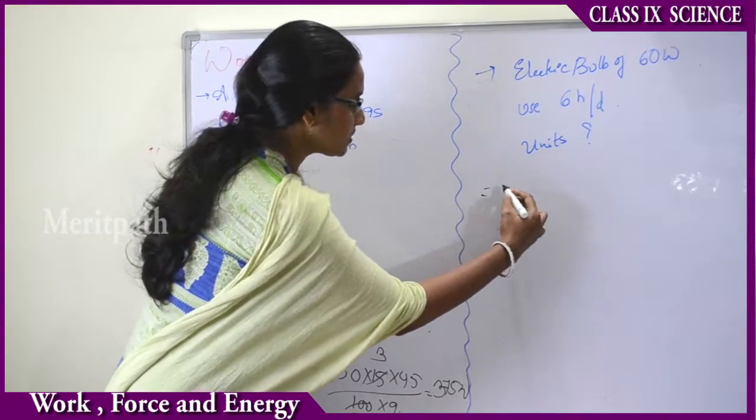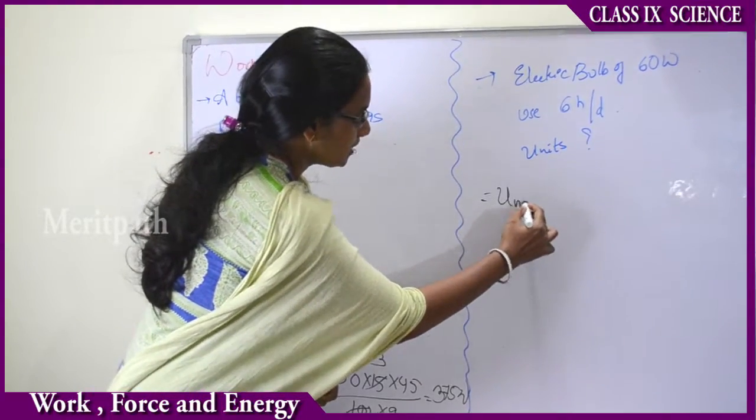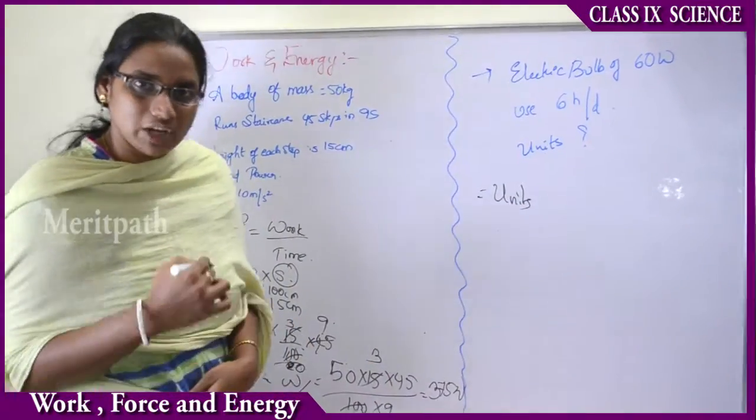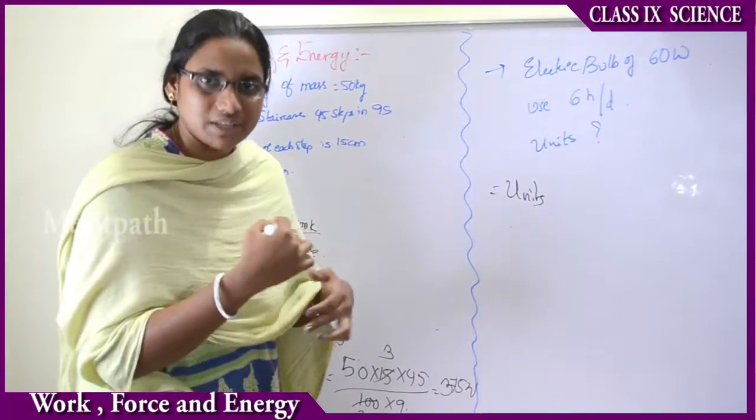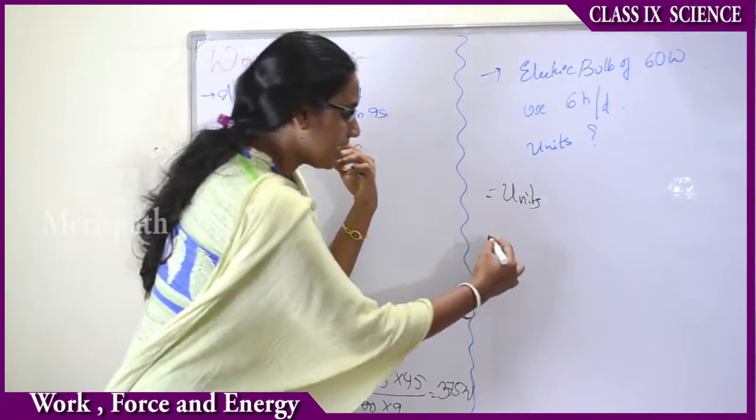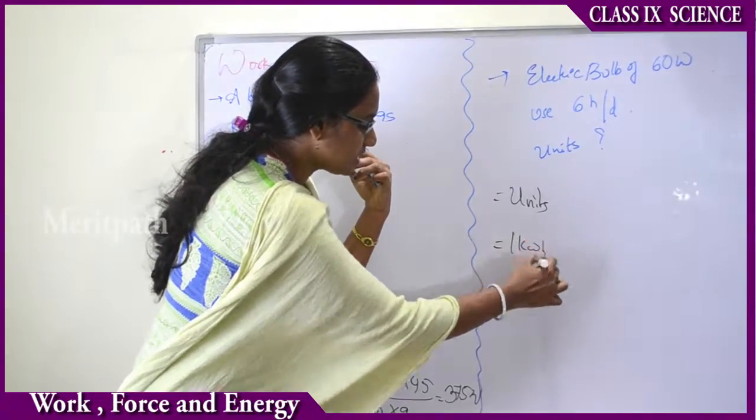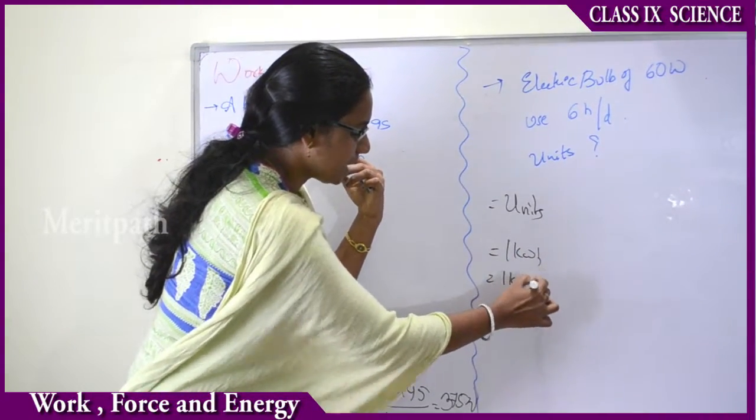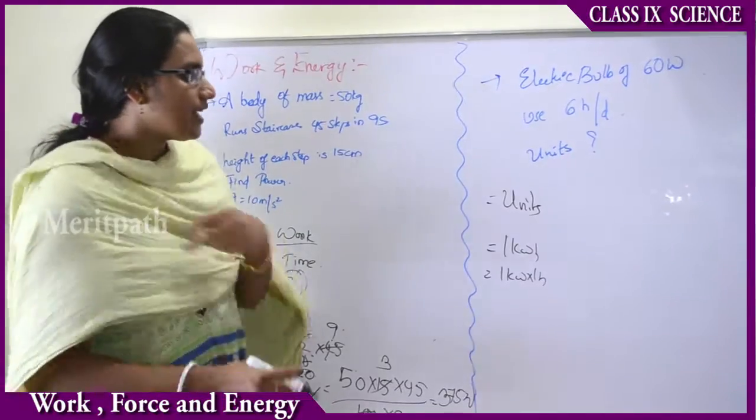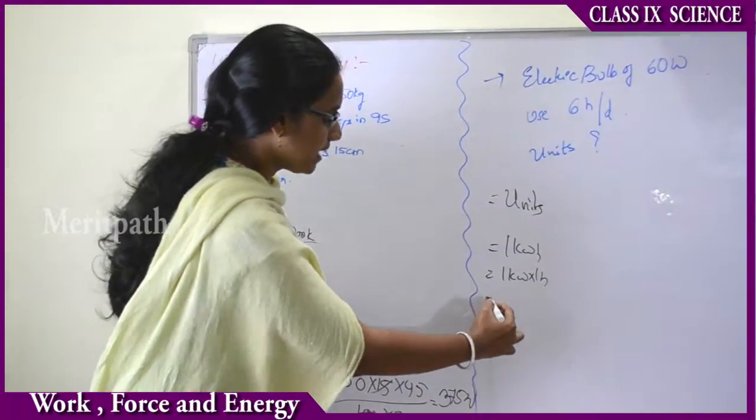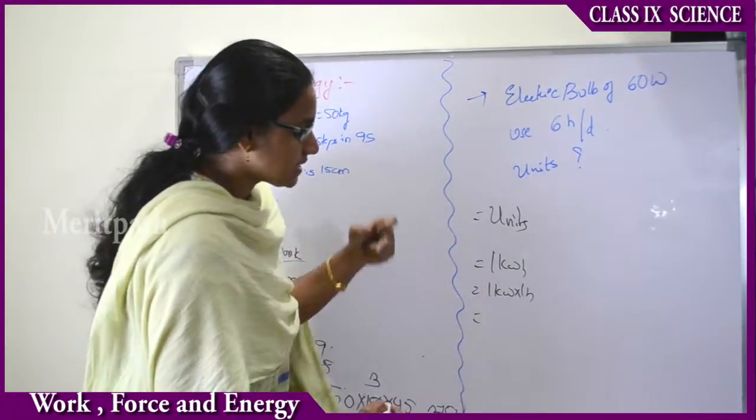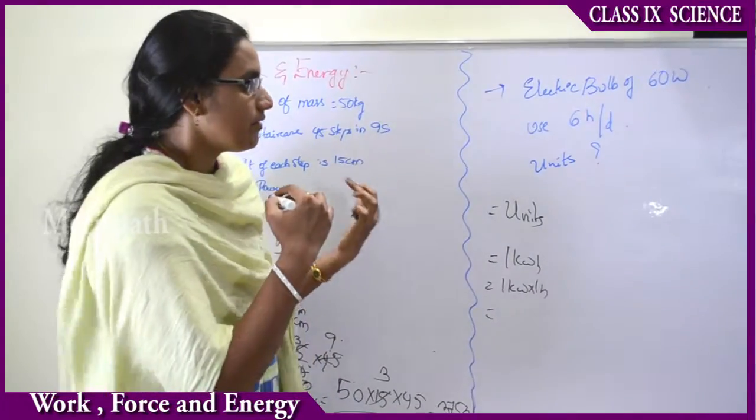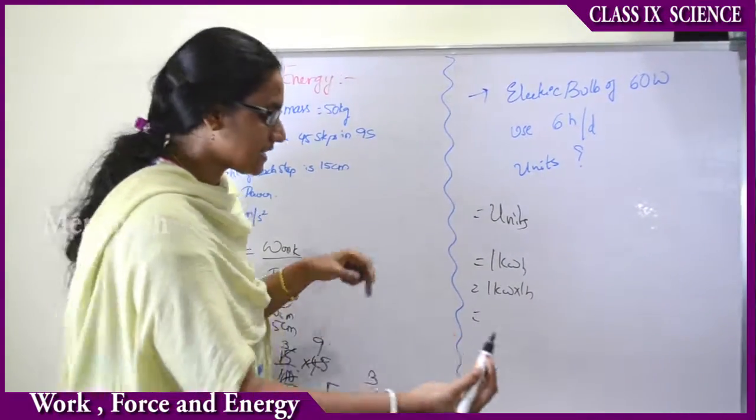That will be calculated per day. 1 kilowatt hour units will be calculated for the electricity bill, and 1 kilowatt hour equals to 1 kilowatt into 1 hour. Therefore, 60 watts, with the conversion of 1 kilowatt into watts, that is 1000 watts. 1 kilowatt equals to 1000 watts.